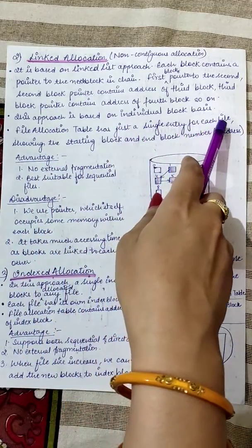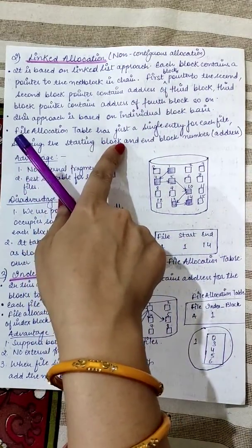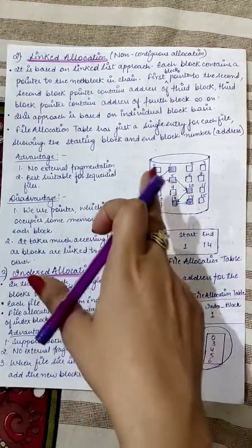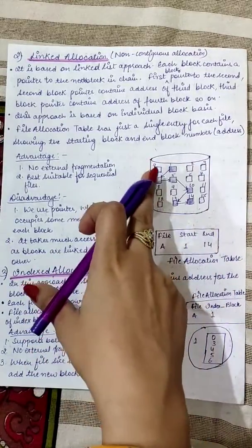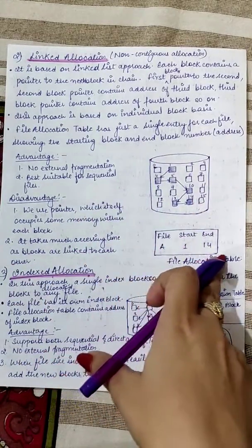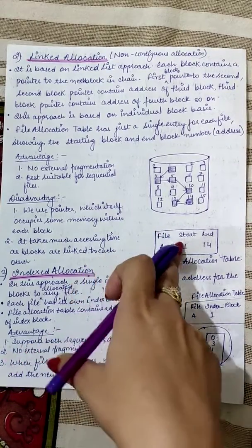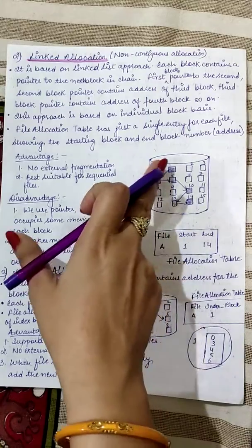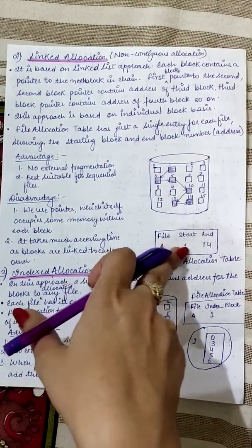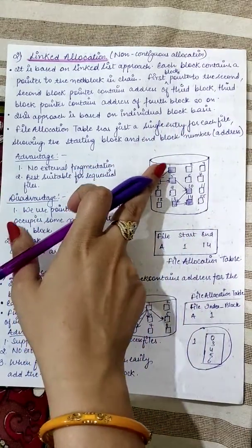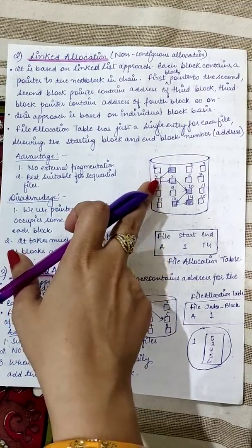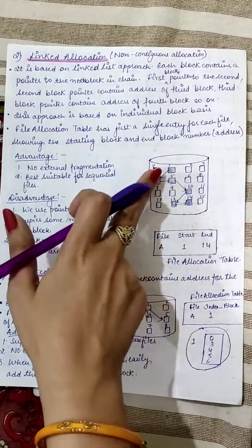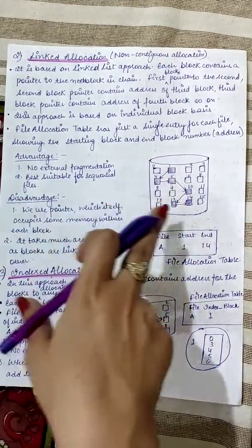In linked allocation, the file allocation table has a single entry for each file showing the starting block and the end block number. For example, with 16 blocks addressed 0 to 15, file A starts at block 1. Block 1 contains the address of block 4, block 4 points to 5, then 10, then 13, then 14. So the FAT shows file A with starting block 1 and end block 14.